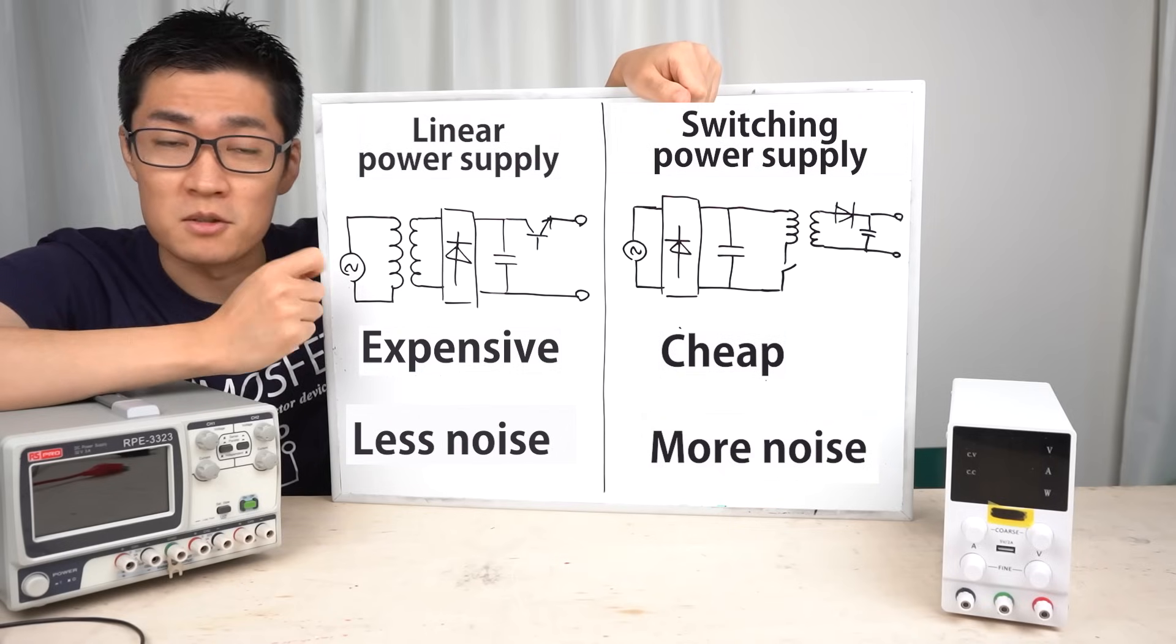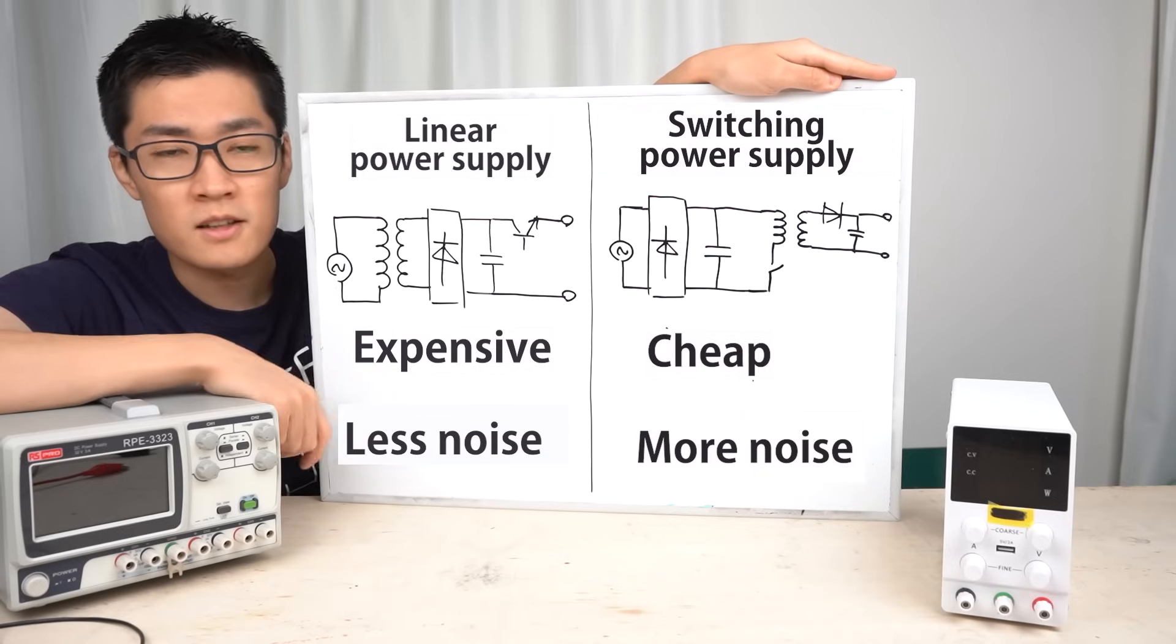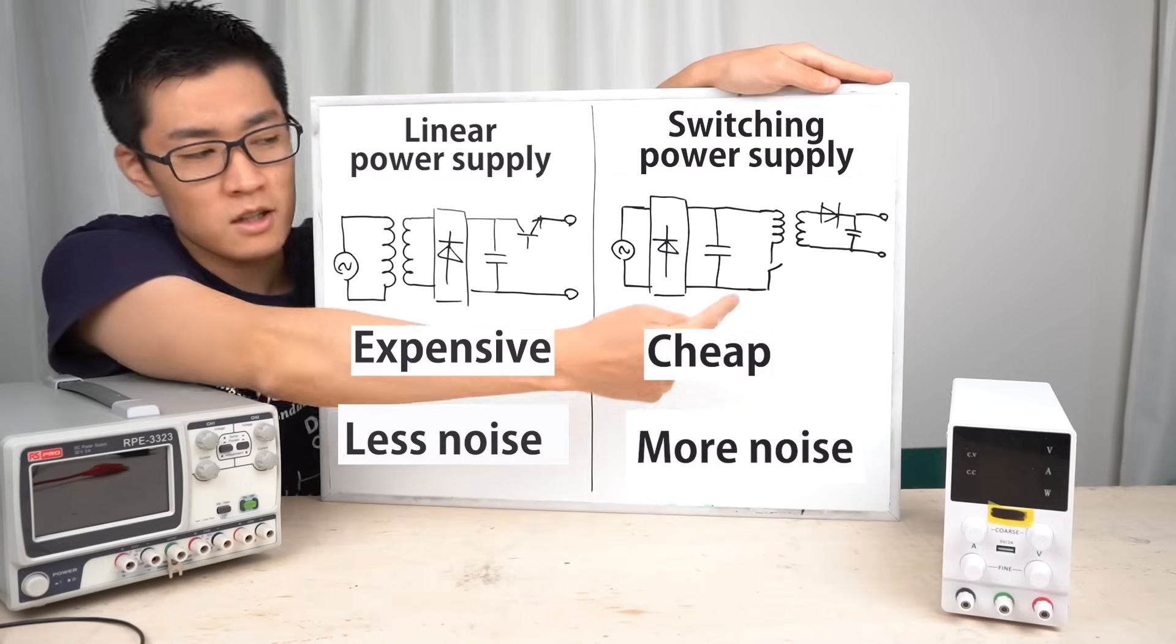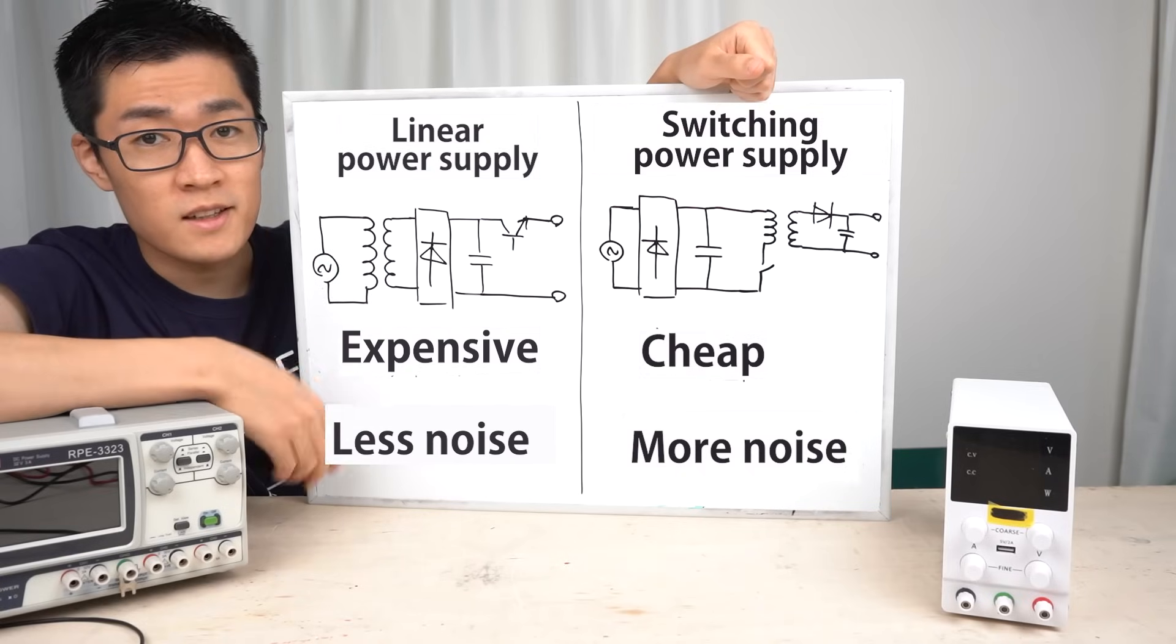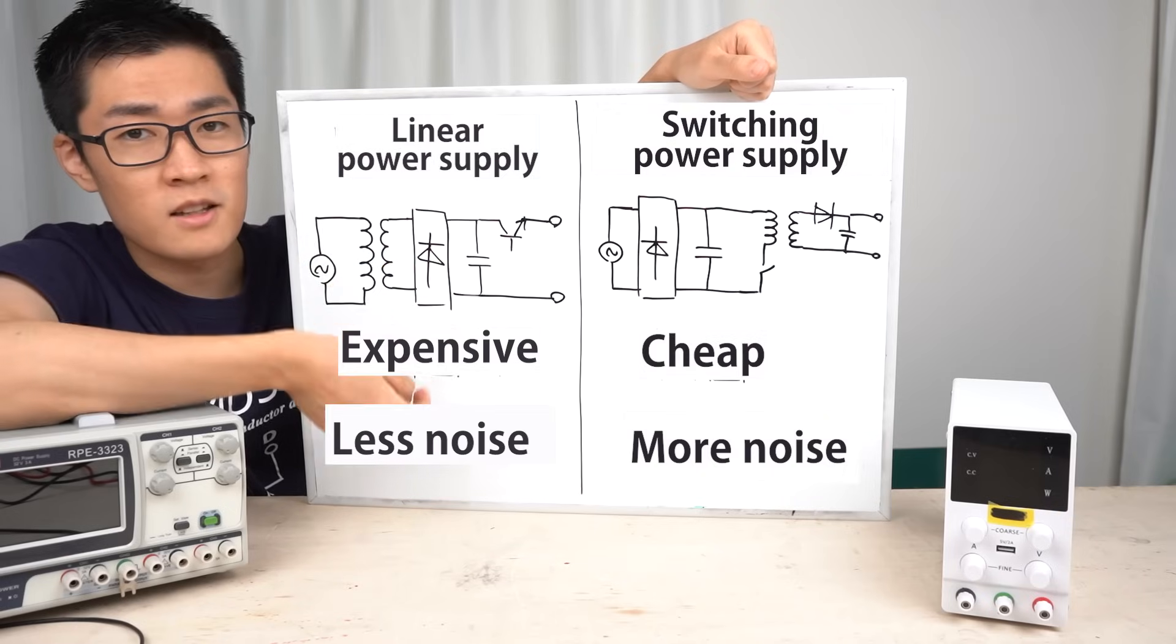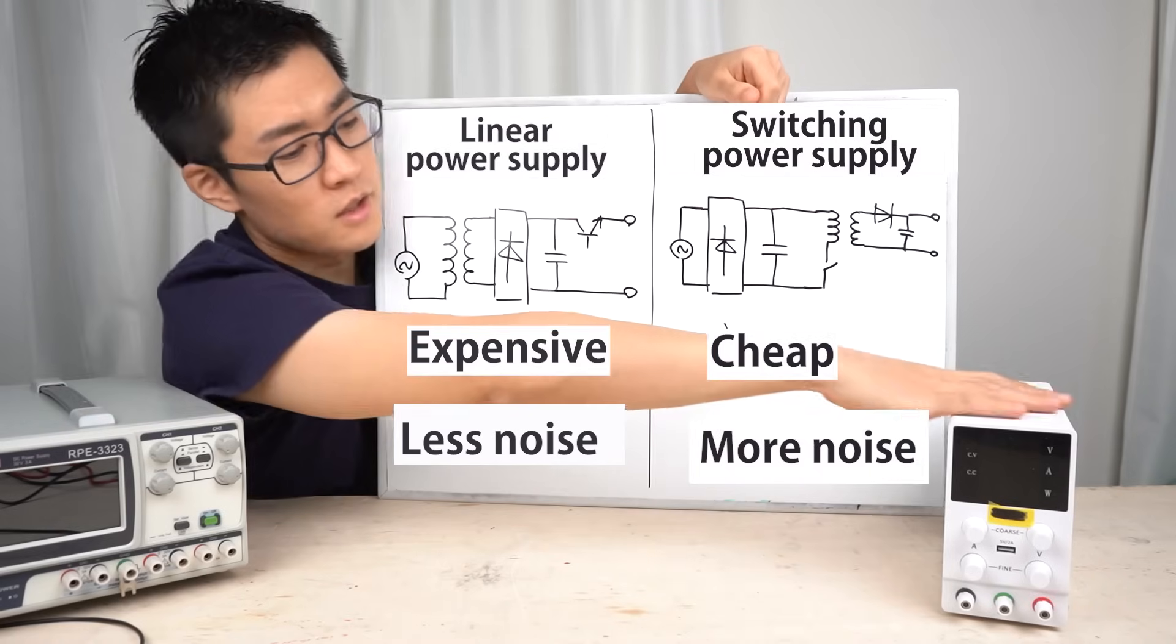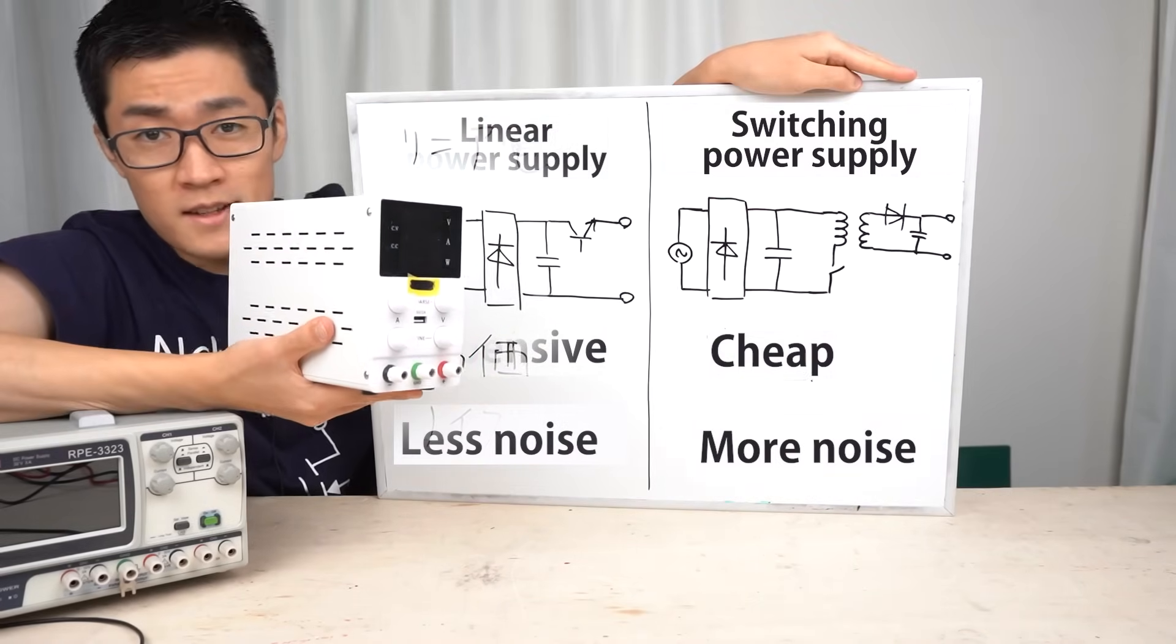Before buying a power supply, you need to know the differences between linear power supplies and switching power supplies. Linear power supplies tend to be more expensive but they produce less noise. Switching power supplies are quite cheap but they produce more noise. Most extremely cheap adjustable DC power supplies sold on Amazon are switching power supplies. I don't think there are any super cheap linear power supplies. This is the super cheap adjustable DC power supply I bought. It was about $45. It's also a switching power supply.